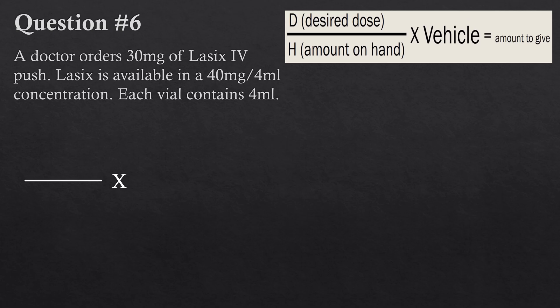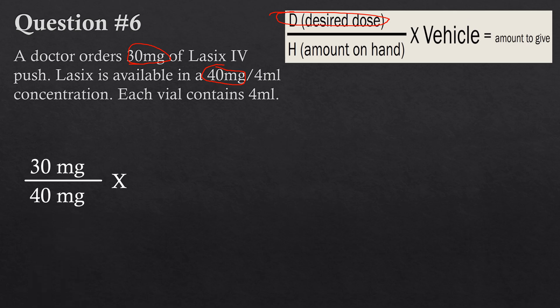Question six: a doctor orders 30 milligrams of Lasix IV push. Lasix is available in a 40 milligrams per 4 milliliter concentration; each vial contains 4 mL. Pause and try it yourself. The desired dose is 30 milligrams on top. The amount on hand is 40 milligrams, so that goes on the bottom.